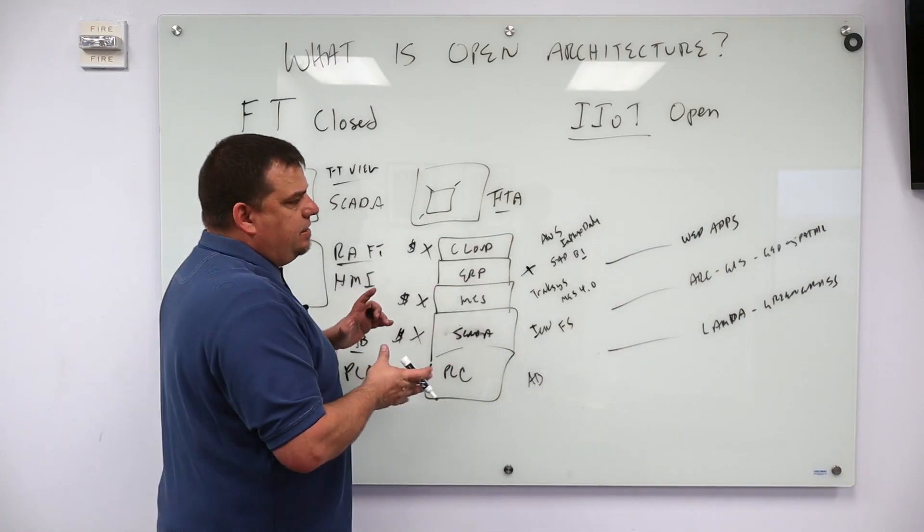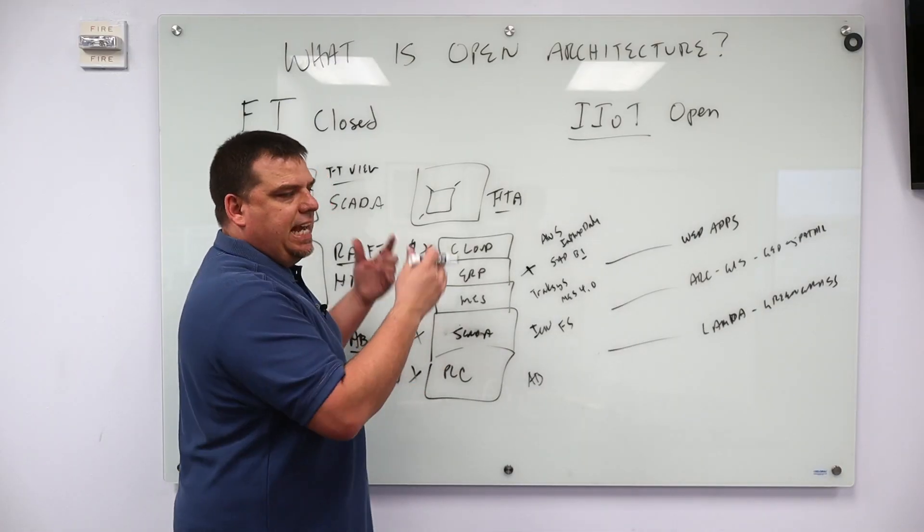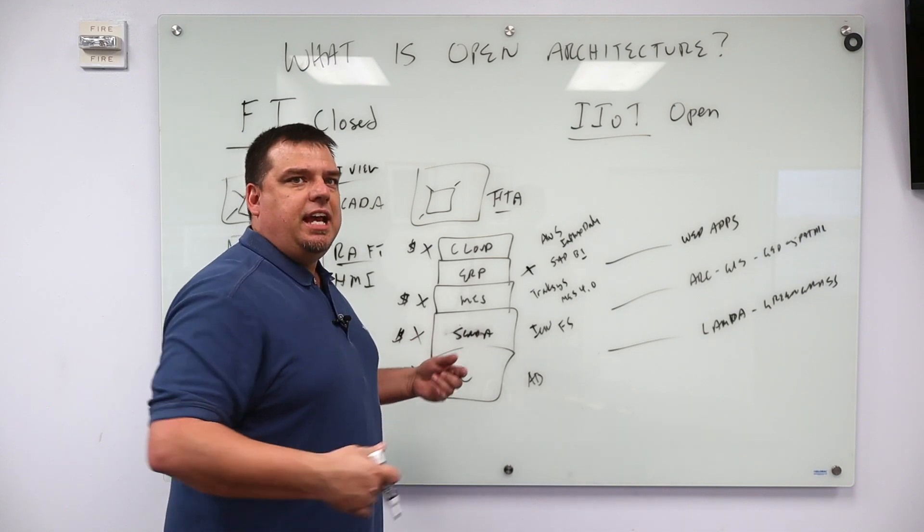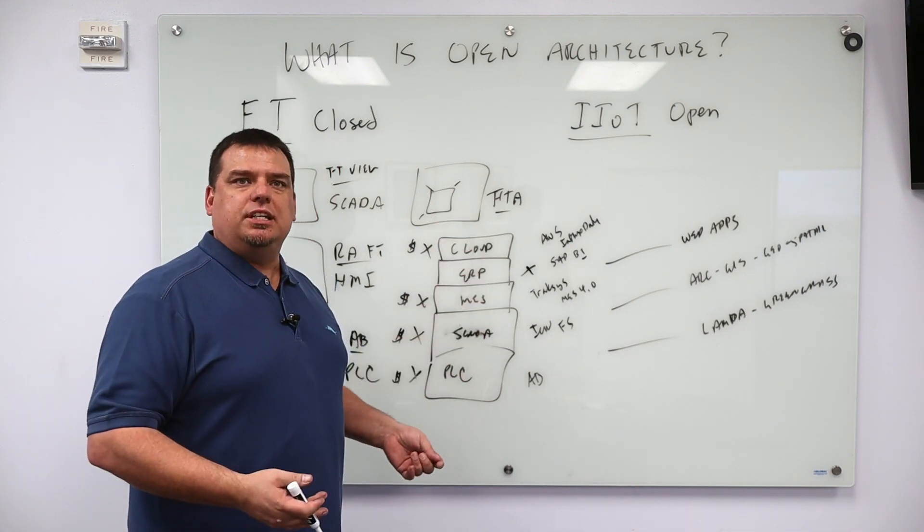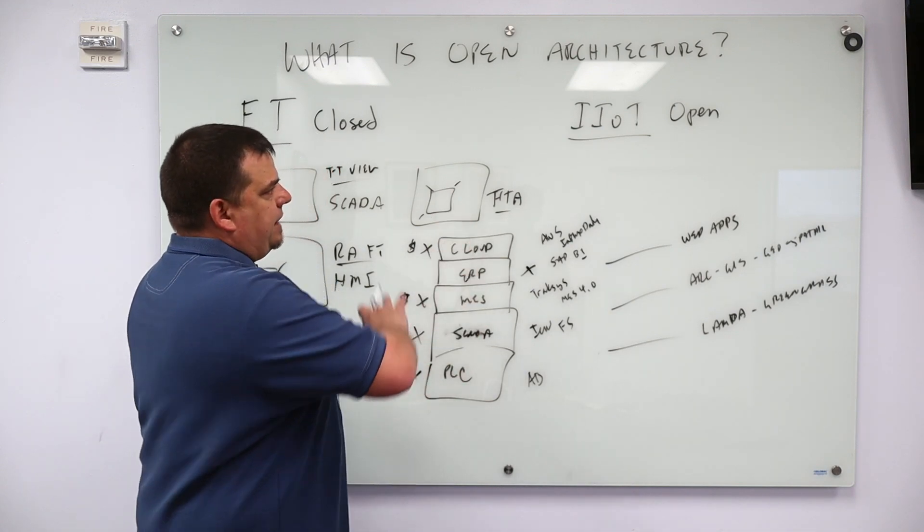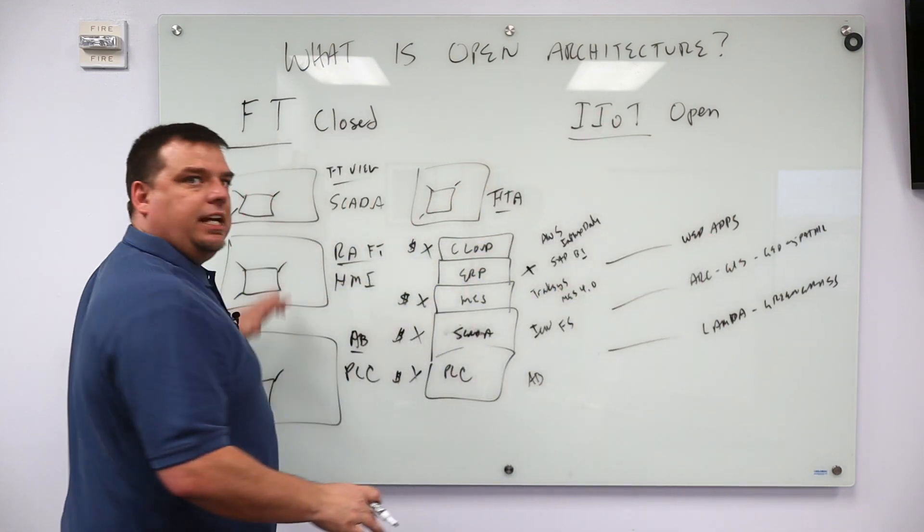What I need to do all of that is an open architecture. This is the idea of Industry 4.0: taking our data, getting our data into a unified namespace, and then just plugging node applications into our namespace. That's the difference between open and closed.